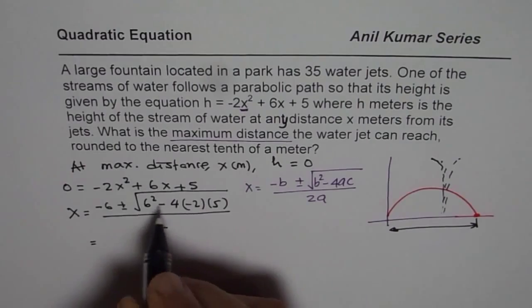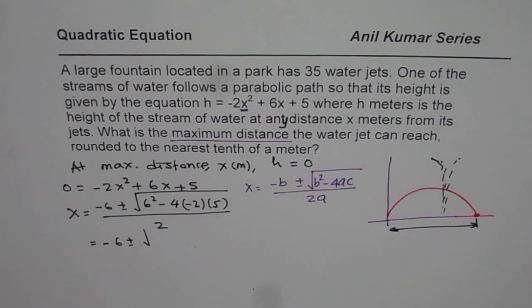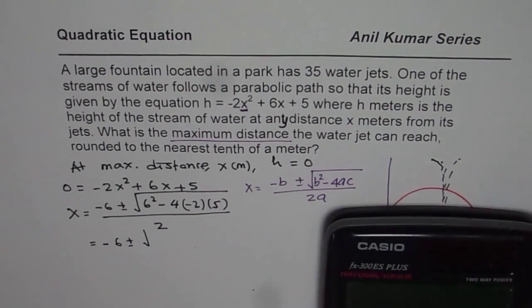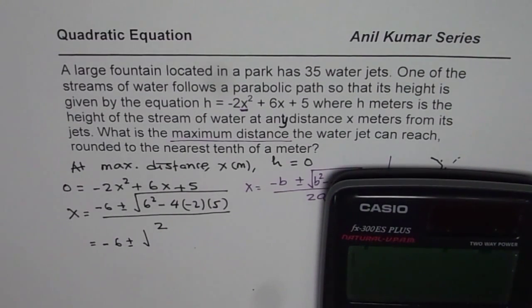So we can use the calculator to find this answer, which is minus 6 plus minus square root of, let us use the calculator. We know one thing: minus and minus becomes plus, so we will just add them up, right? So we have 6 squared.